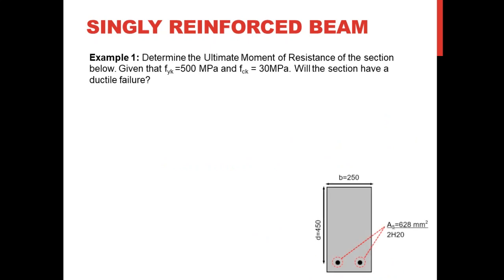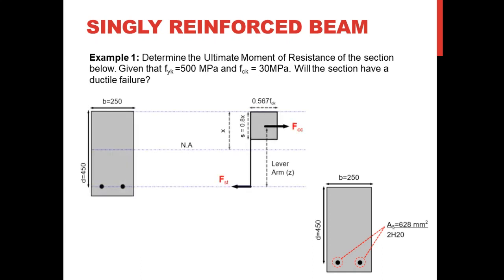Without further delay, let's jump to Example 1. We are asked to determine the ultimate moment of resistance of a given section. We are given the yield strength, the compressive strength of the concrete, and asked to determine whether the section will have a ductile or brittle failure mode. We have the area of steel, the breadth b, and the effective depth d.